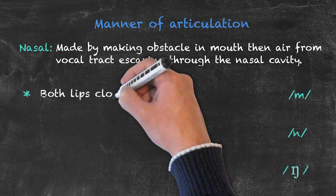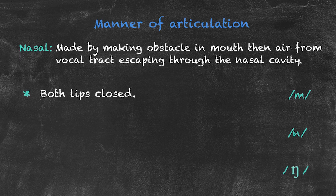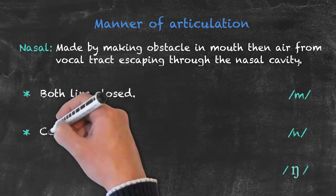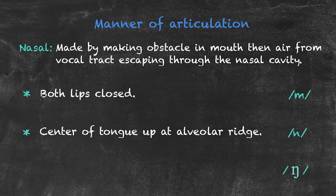These sounds include M, N, and NG, moving from the front of the mouth to the back. First, with the M sound, we're closing both lips and the air is escaping through the nasal passage. Next we have our N sound — the closure is inside the mouth, with our tongue closing up near our alveolar ridge, and the air is escaping through the nose.